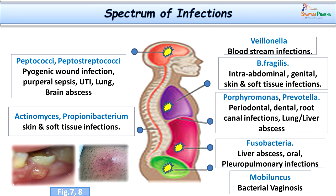Gram negative non-sporing anaerobic bacilli form the major chunk of clinical infections. Bacteroides fragilis can cause intra-abdominal, genital, and soft tissue infections. Porphyromonas and Prevotella are basically involved in oral and dental root canal infections, and can also cause bloodstream infections and lung and liver abscesses. Fusobacteria can cause liver abscess, lung abscess, oral abscesses, and pleuropulmonary infections. Mobiluncus — also known as Döderlein's bacillus — is associated with bacterial vaginosis along with Gardnerella, causing typical clue cells.